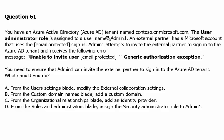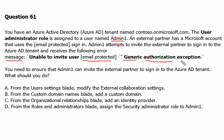You have an Azure Active Directory tenant named contoso.onmicrosoft.com. The user administrator role is assigned to a user named admin1. An external partner has a Microsoft account that uses the email to sign in. Admin1 attempts to invite the external partner to sign in to the Azure Active Directory tenant and receives the following error: unable to invite user with the email address of user — generic authorization exception.